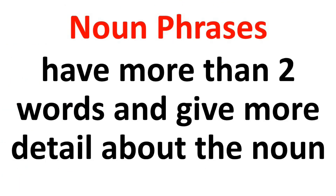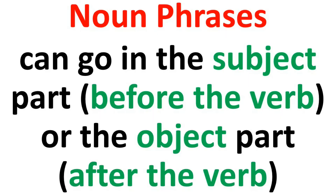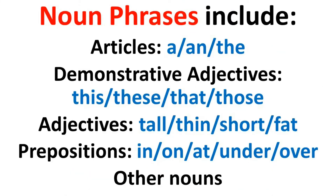Noun phrases have more than one word — meaning at least two words — and give more information or detail about the noun you're describing. So we're not using one word anymore; we're using two or more. A noun phrase can go in the subject part of the sentence, before the main verb, or in the object part of the sentence, after the main verb. Now let's look at some words we can use to make a noun phrase. We can use an article: a, an, the.